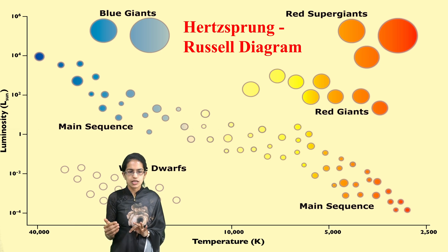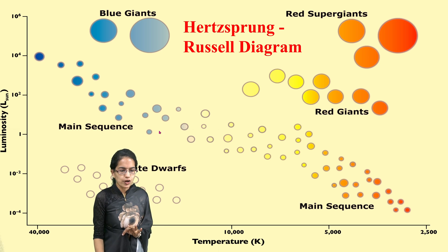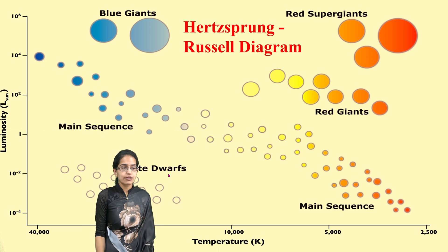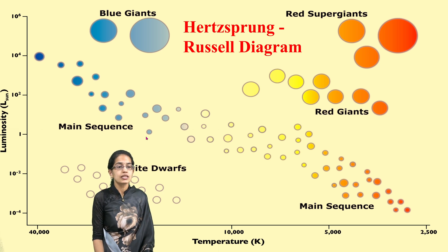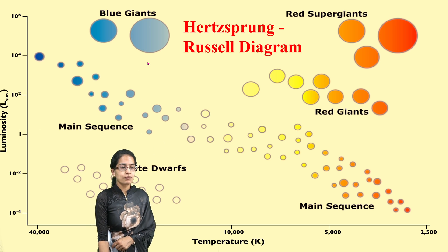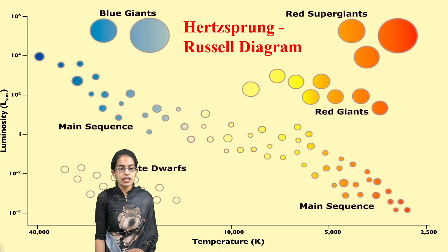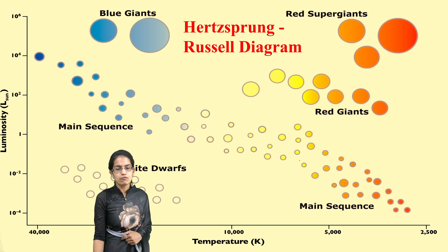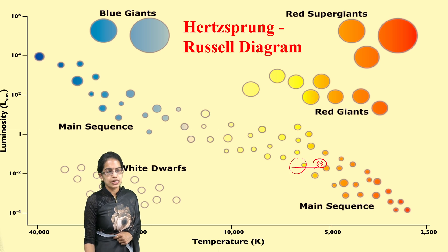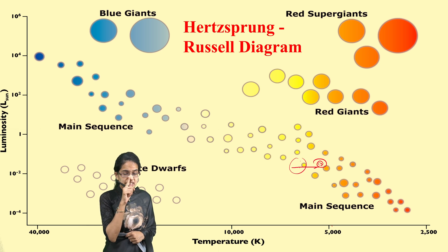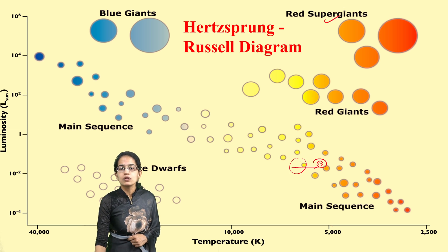The HR diagram is a graph plotted between temperature and luminosity. As we can see, we have white dwarfs which have higher temperature and lower luminosity, in contrast to blue giants with higher temperature and higher luminosity. If we place the Sun, it would lie somewhere closer to the region of white dwarfs, where you have around 5000 degrees Kelvin as the temperature, with lower levels of luminosity. We also have supergiants and giants.